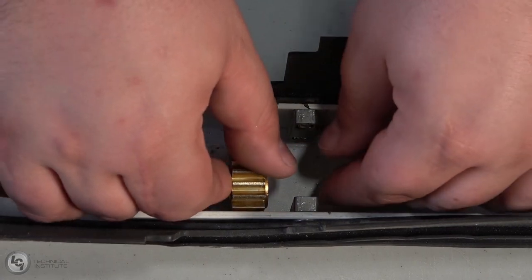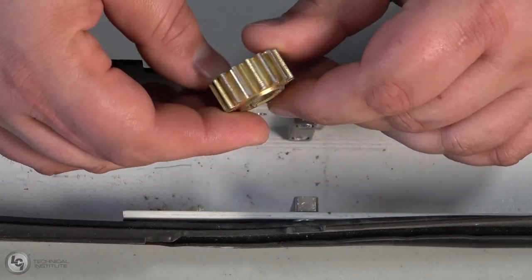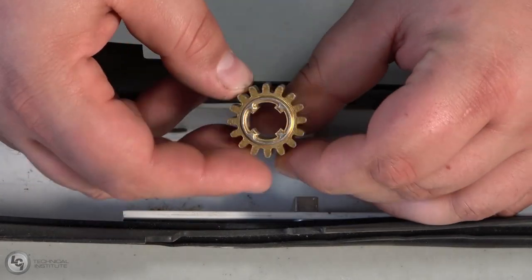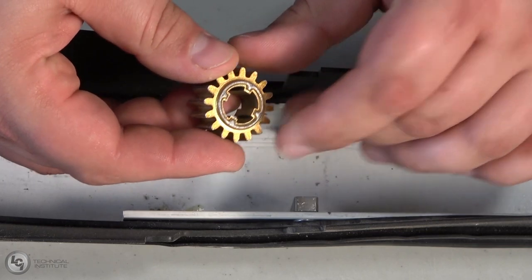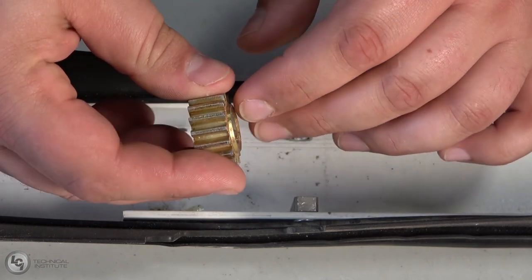The last part left for you to remove is the spur gear. Notice that the lip of the spur gear is facing downward as we remove it. Remember that it needs to be oriented this way during reinstallation. While inspecting the spur gear, check for any damage or missing teeth.